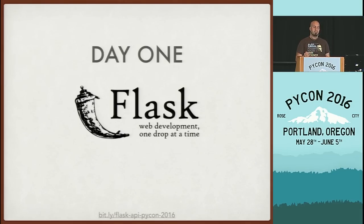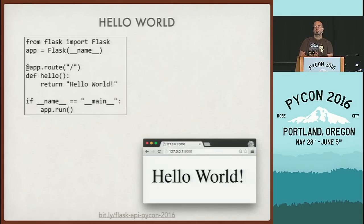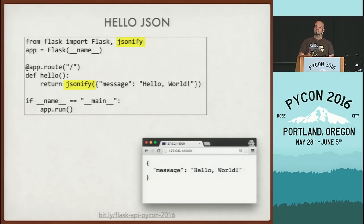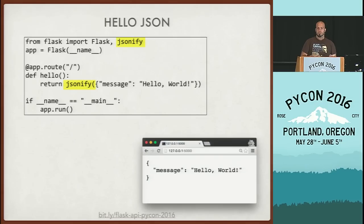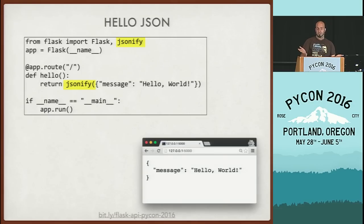My favorite tool for building web applications and APIs is Flask, because it has a really shallow learning curve and it's easy to get started. Let's start with the hello world example from the Flask website — short and sweet. The first step is to modify this to get some JSON information. Flask has a built-in function called JSONify, and if you pass data to that function, it will return it as a JSON formatted response. So right now we have our very first API — it's read-only, it just returns the string hello world.